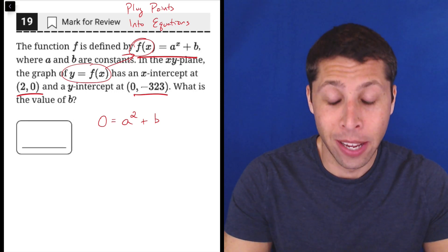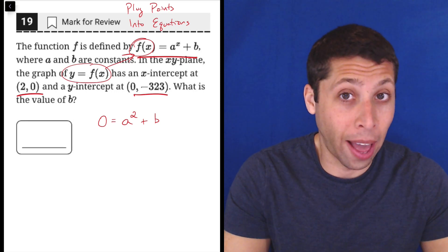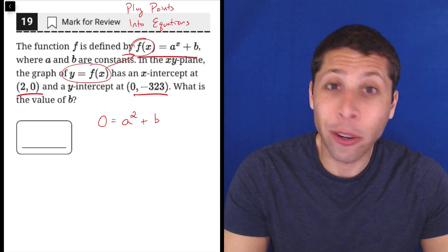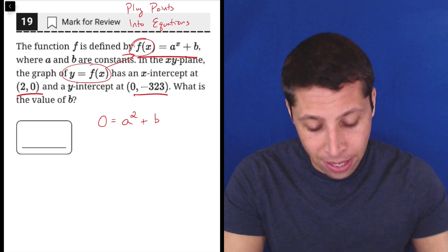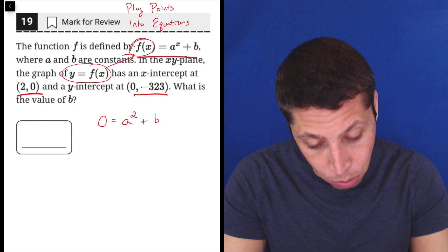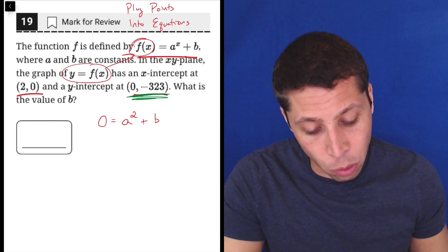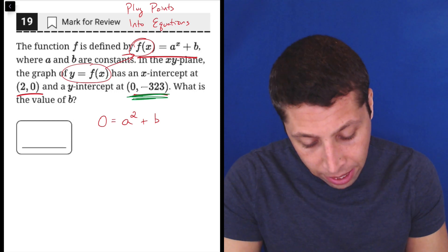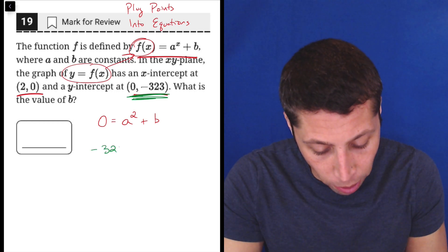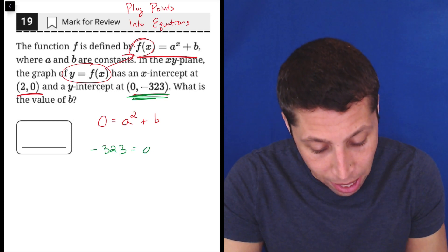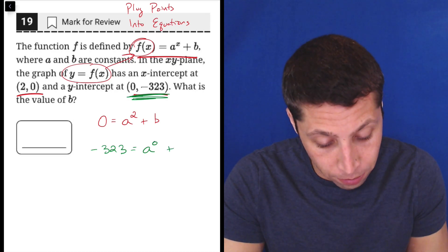I don't know a and b, though. So I don't know what to do with this. This is okay. Don't erase it. Just write it down. See what we get. Let's plug in the other one. Let's do this point here. Let me switch colors. So let's do this point. This is the y-intercept. So in this case, negative 323 is equal to a to the 0 plus b.